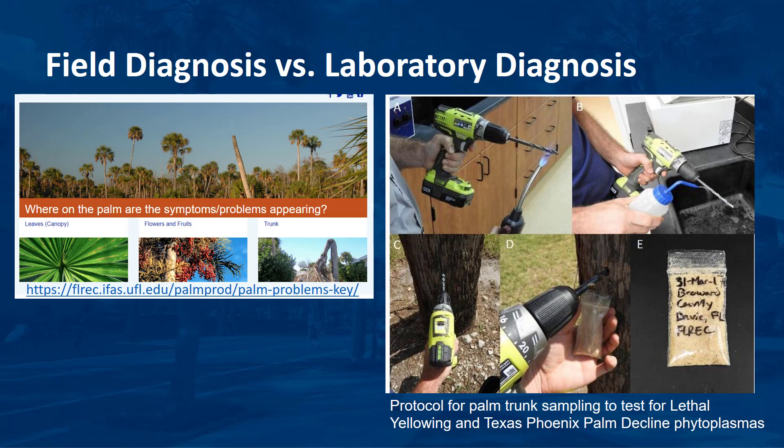Your initial field diagnosis will determine which palm tissue to sample. For example, for nutritional deficiencies, you select the youngest fully expanded leaf and remove four to six middle leaflets. In contrast, for Texas-Phoenix palm decline, you have to remove internal trunk tissue.